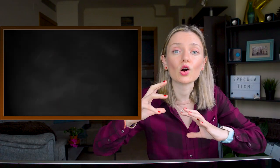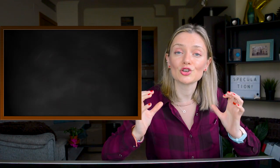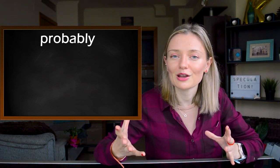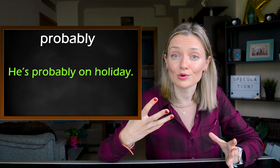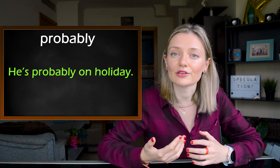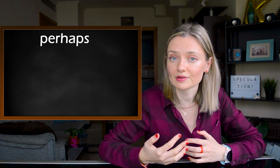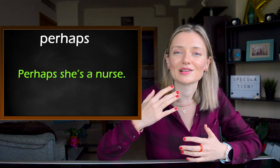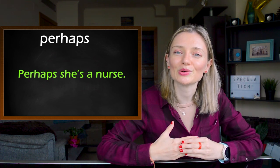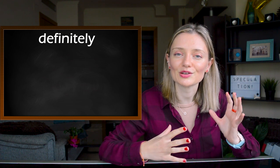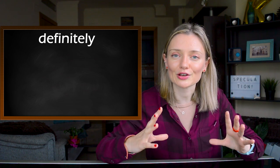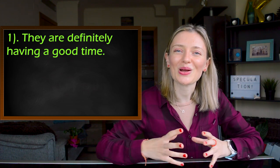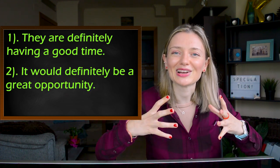Number eleven: another option is to use adverbs. Like 'probably' — for example: 'He's probably on holiday.' Another adverb is 'perhaps' — for example: 'Perhaps she's a nurse.' And another adverb is 'definitely.' For example: 'They are definitely having a good time,' and 'It would definitely be a great opportunity.'